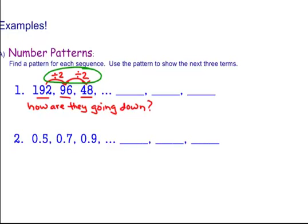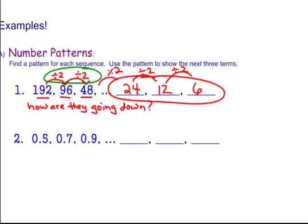I'm going to use the pattern to come up with the next three terms. So if I continue to divide by two, I get 24. And again, I divide by two, and I get 12. And again, I divide by two, and I get six.